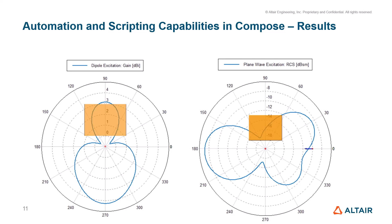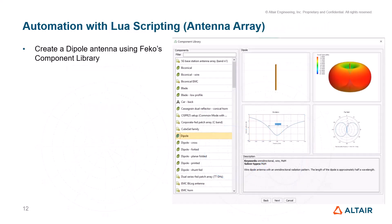Here are the results from running the LUA script in Compose in the background. On the left is the first standard configuration where the dipole is being excited with the PEC obstacle — showing the gain of the dipole. On the right is the second standard configuration where the plane wave is being excited, showing the RCS due to the dipole and the PEC box obstacle.